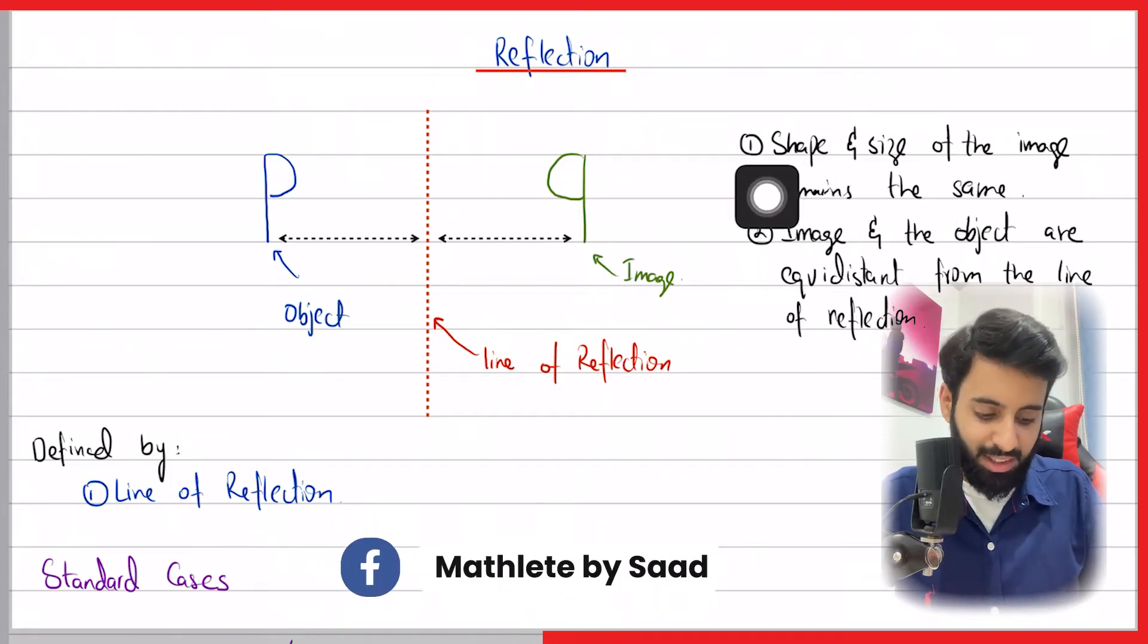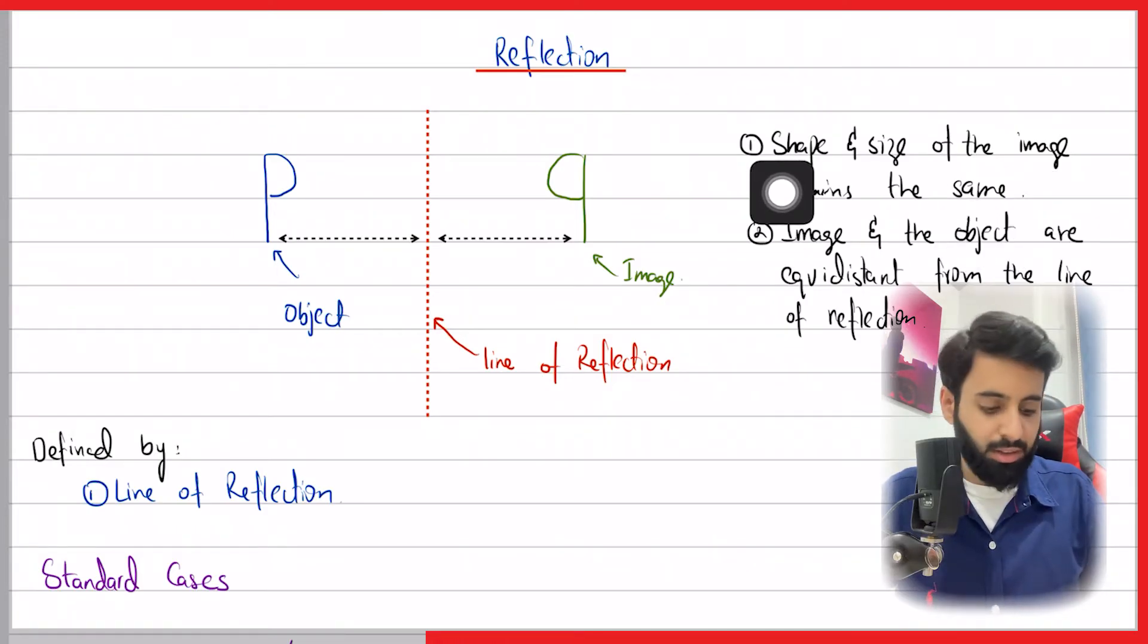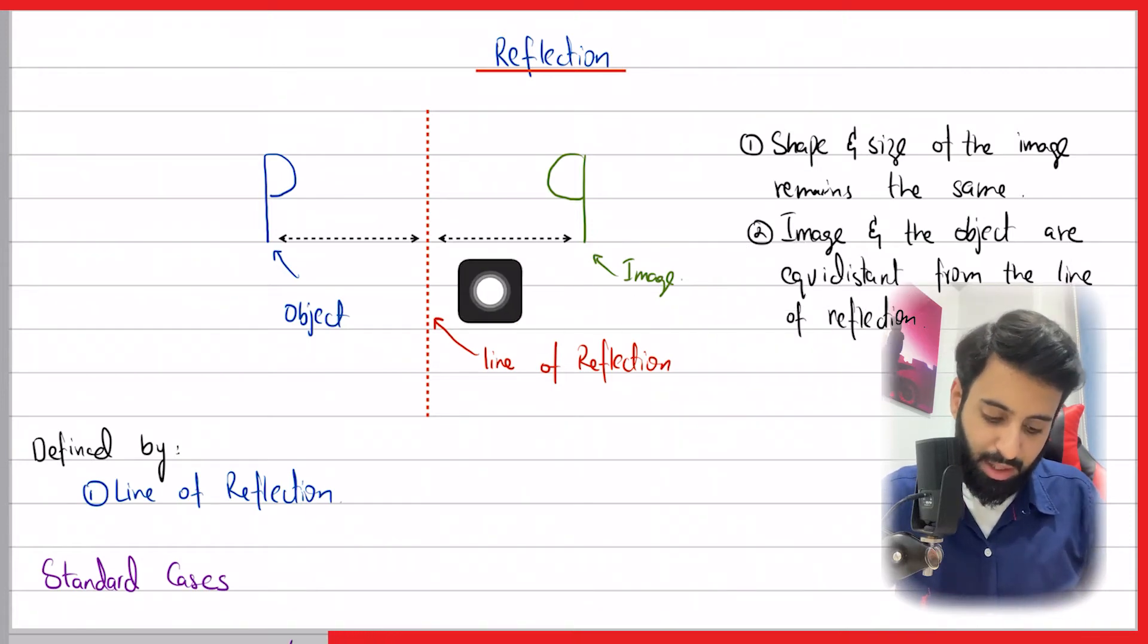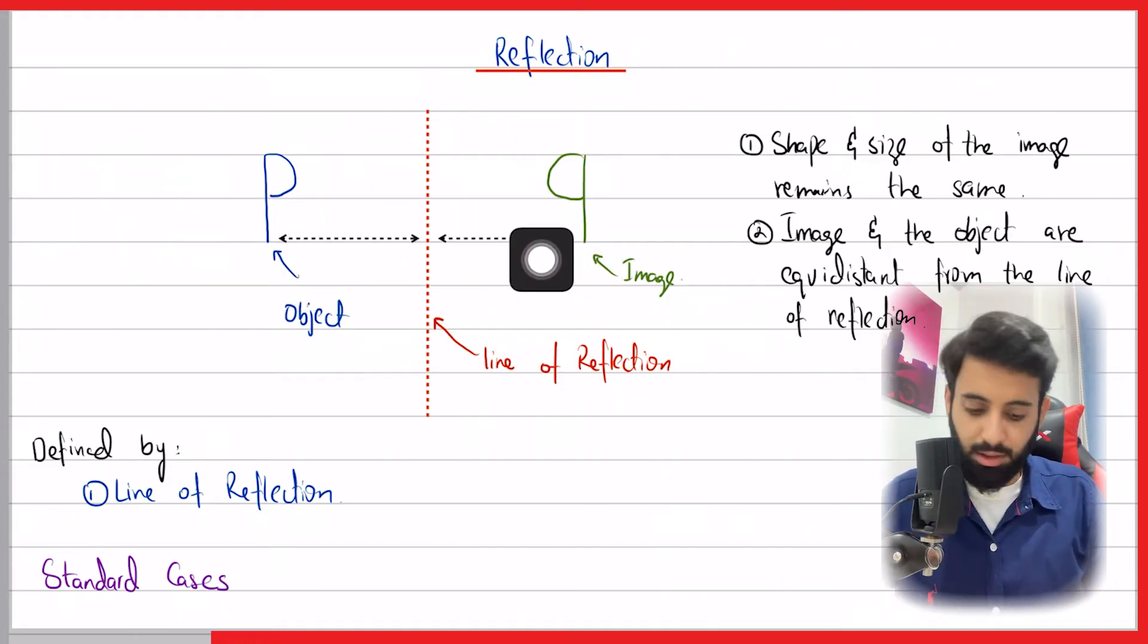A couple of key points: shape and size of the image remains the same. We can see that the shape doesn't change and the size also doesn't change. Image and the object are equidistant from the line of reflection. That means exactly how far the object is, that is how far the image is going to be. The distance remains the same.